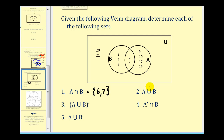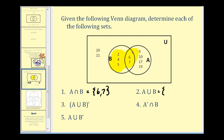Second, A union B — that would be all the elements that are in A or in B. So we'd have two, four, five, six, seven, nine, ten, seventeen, and nineteen. That's all the elements in the entire combined region of A and B.